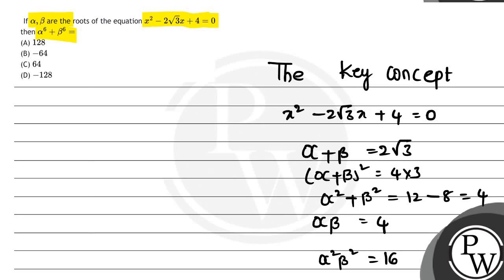Now to find α⁶ + β⁶, we use the formula a³ + b³ = (a² - ab + b²)(a + b). We can write α⁶ + β⁶ as (α²)³ + (β²)³.